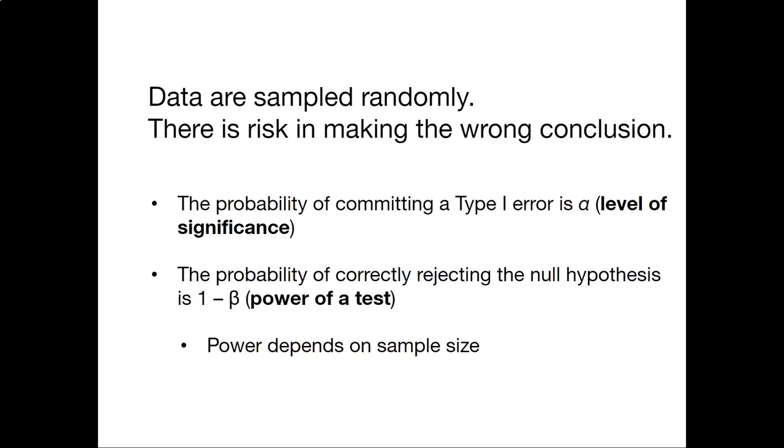The probability of correctly rejecting the null hypothesis is 1 minus beta. We call that the power of a test. And the power really depends on the sample size. So this is really why it's important to be thinking about type 1 and type 2 error as they result in your analysis.